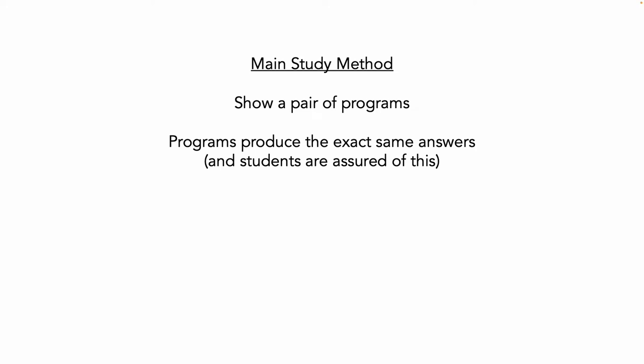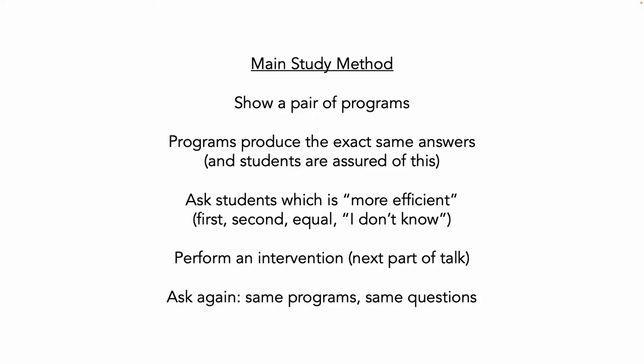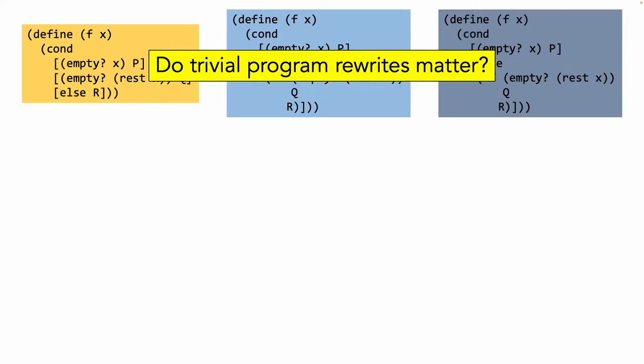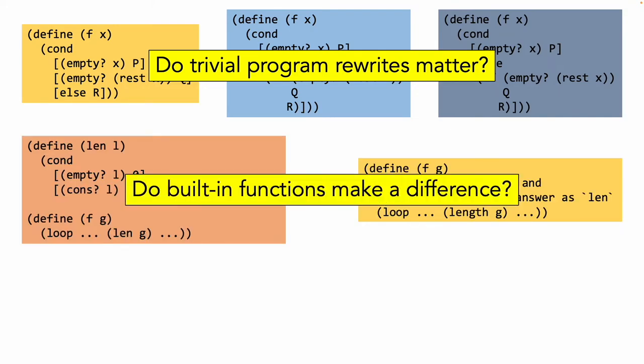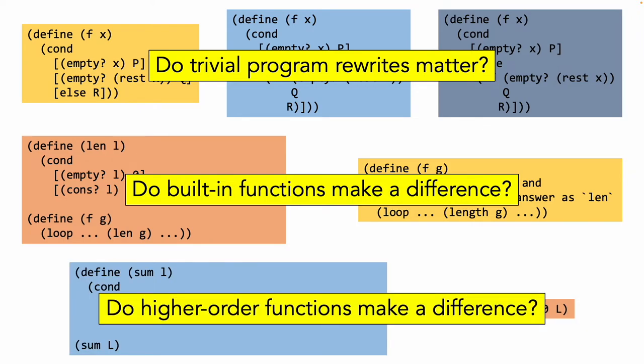We showed students pairs of programs that both produced the same answer. We then asked them to compare the two for efficiency — they could say either one was more efficient, say they were equal, or say they didn't know. We also performed some interventions, which we'll get to later. What matters is that they tested different features. In this first triple, we make trivial syntactic changes that have no semantic consequence. In this pair, we compare a built-in library function with its handwritten equivalent. This pair does the same, except the built-in function is a higher-order function.